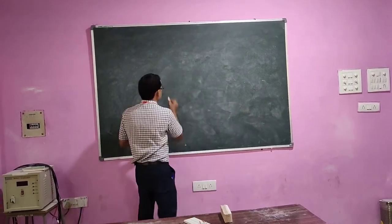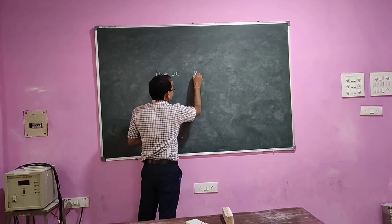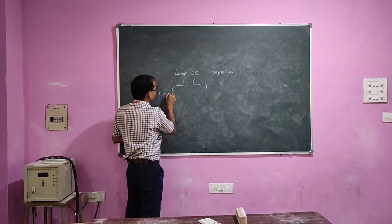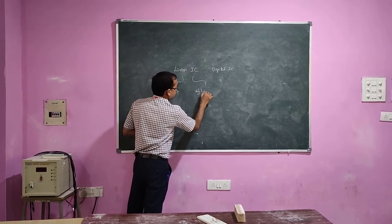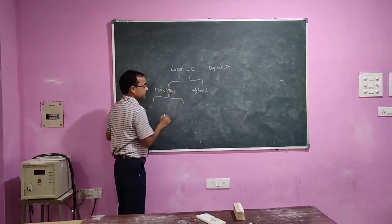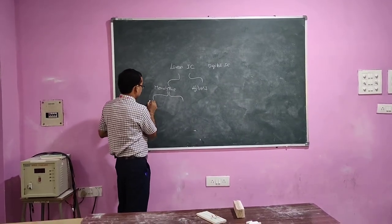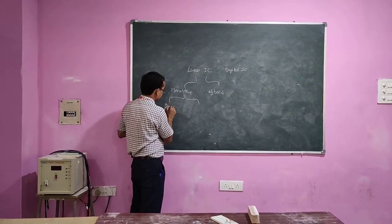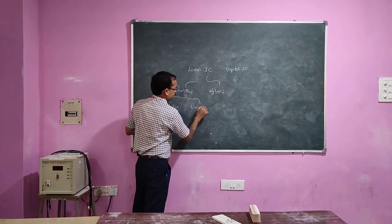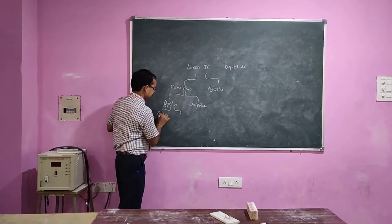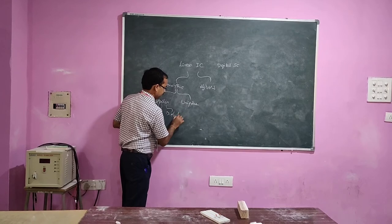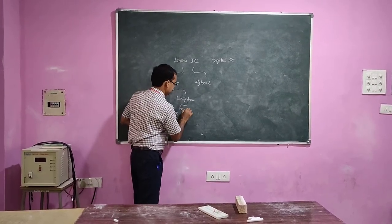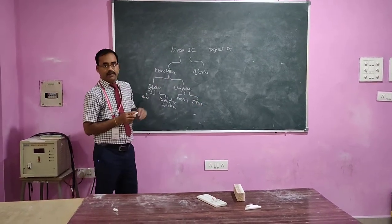Types of ICs: linear ICs and digital ICs. In linear ICs, we have two types — monolithic and hybrid ICs. Again, monolithic can be divided into two types: bipolar and unipolar. Bipolar can be again two types: p-n junction isolation and dielectric isolation. Unipolar covers JFET, MOSFET, and CMOS.